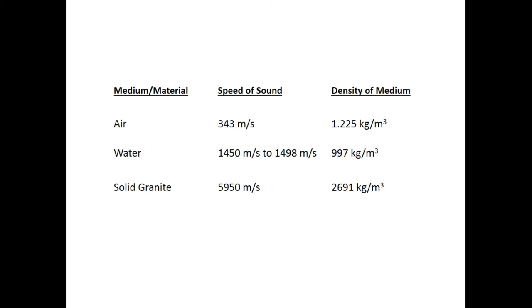A few examples of materials and the speed of sound compared to their densities can be seen in this chart. Air has a speed of sound of 343 meters per second. The density of air, however, is only 1.225 kilograms for every cubic meter. If I go to water, it is a much denser medium. The sound will travel through water at approximately 1,450 meters per second. And it has a density of 997 kilograms per cubic meter. We usually round it off to about 1,000 kilograms per cubic meter.